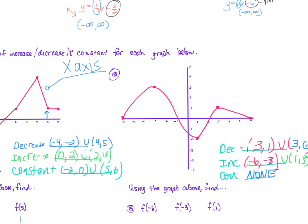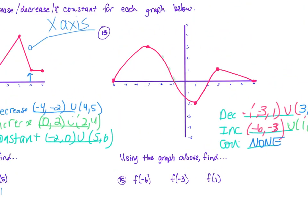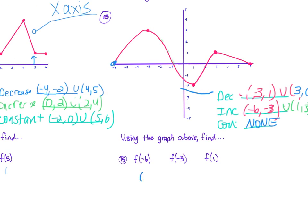Using the second graph: f of negative 6 — go to negative 6 on the x-axis, y value is 0. At negative 3: y value is positive 3. At 1: read the y value from the graph.